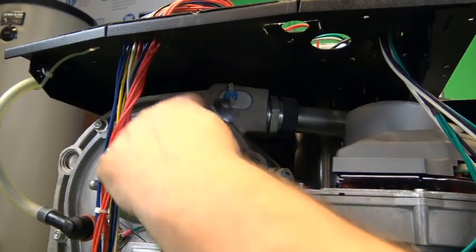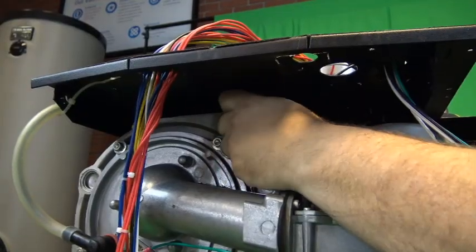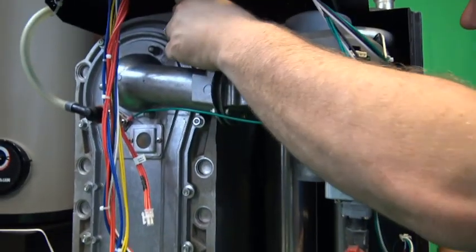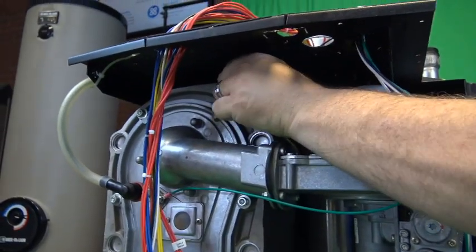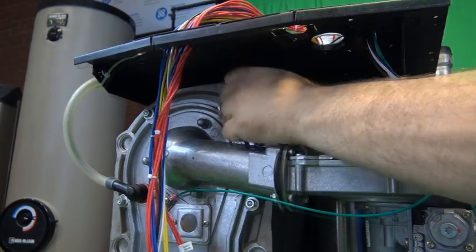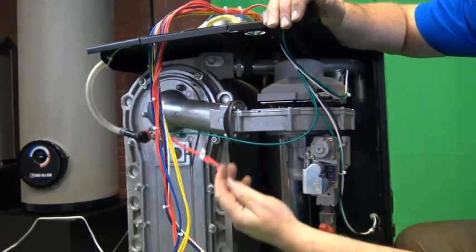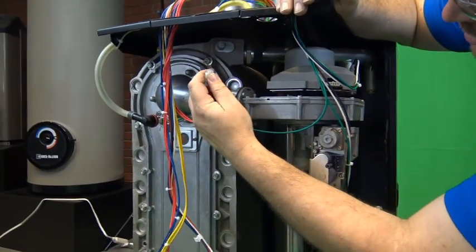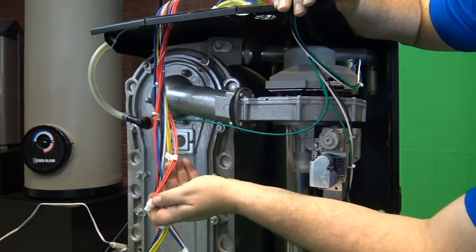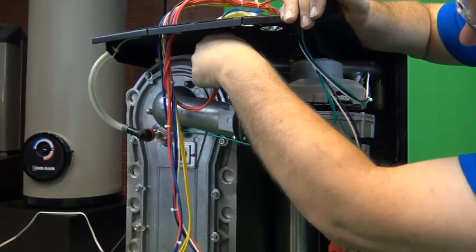Now we will change the sensors. We will start with the supply sensor. Then we will put the wires, supply sensor as it is marked on the label, come into the supply.